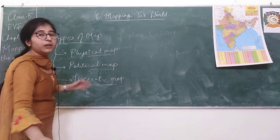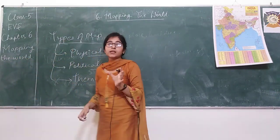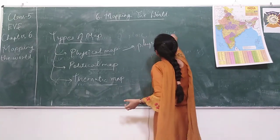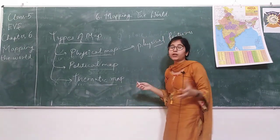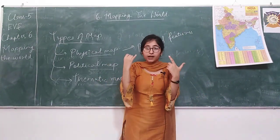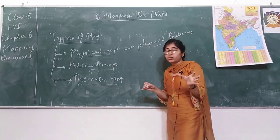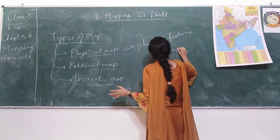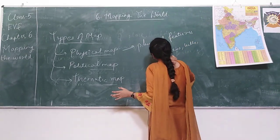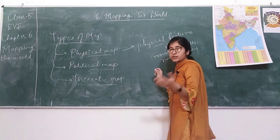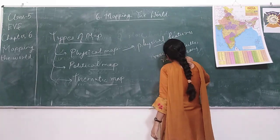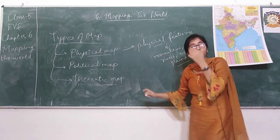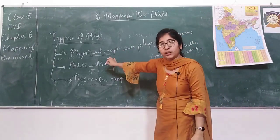First, the physical map. As the name suggests, it tells us about the physical features of that place or country. What are the physical features? Just like the physical features of a human body are our hands, our eyes, and our limbs, the physical features of a particular place are its mountains, its hills, oceans, rivers, plains, and so on. Physical map is used to represent these kinds of physical features.